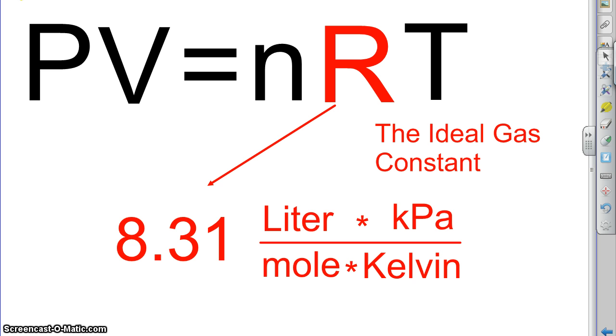If we look, you'll see that the kilopascals is in there instead of atmospheres this time. The liter, mole, and Kelvin, that's all there. So, you need to not only memorize these numbers, but what units go with them. So, the ideal gas constant is 8.31 liter kilopascal per mole Kelvin, or 0.0821 liter atmosphere per mole Kelvin. So, that's the R. That's the hard part. Everything else is easy.